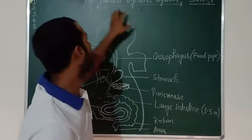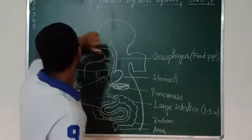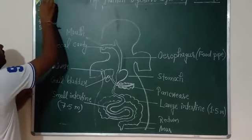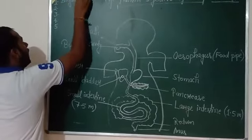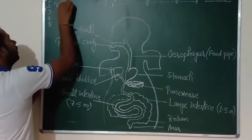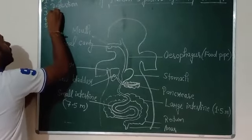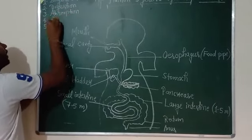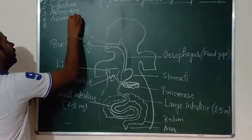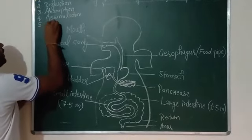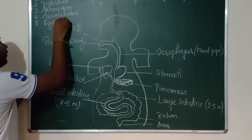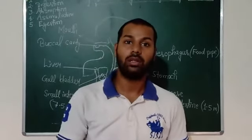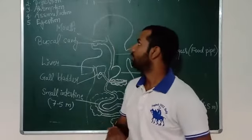Today we will discuss the human digestive system for Class 7. Under the digestive system, the following five processes are present: first is ingestion, second is digestion, third is absorption, fourth is assimilation, and fifth is ejection. These five steps are present in the human digestive system.